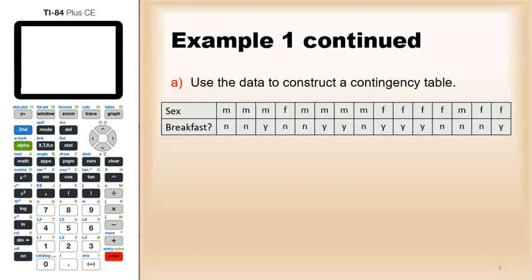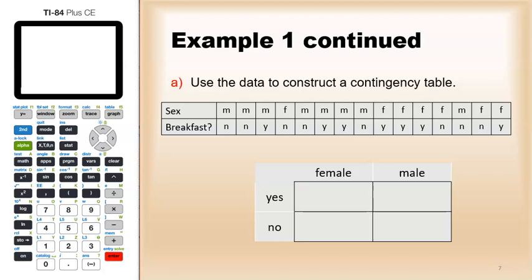If I want to construct a contingency table, one variable would be gender, the other variable would be whether or not they eat breakfast. I start off and create the categories: male, female, yes, no.